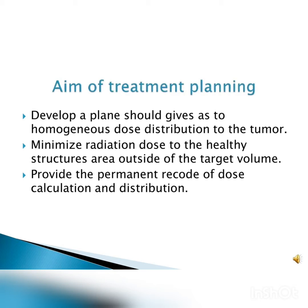The aims of treatment planning are: first, to give a homogeneous dose distribution to the tumor; second, to minimize radiation dose to healthy structures outside of the target volume; and third, to provide a permanent record of dose calculation and distribution.